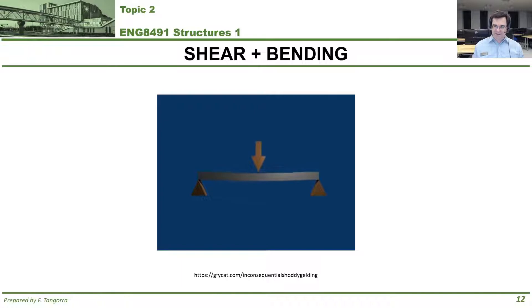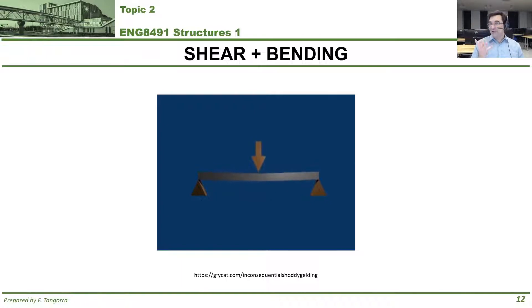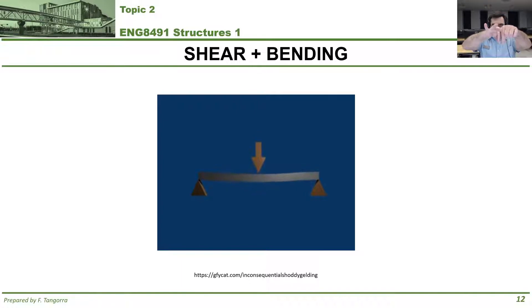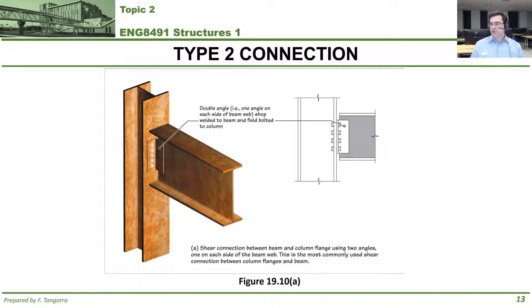Just a reminder on shear and bending: when a force is applied on a beam, the impact that tries to get the beam to resist rotation — smiling or frowning — is bending. Shear is the impact on the beam that tries to rip it apart.